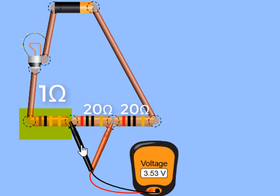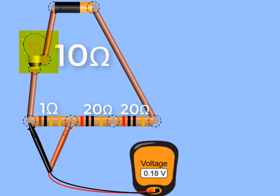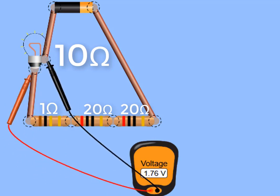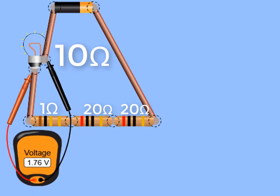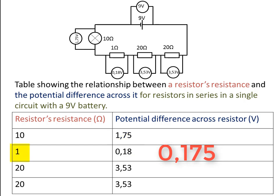What do you think it's going to be across the 1 ohm resistor — again 3.53 or less? It's 0.18 volt, which is obviously less. Now across the bulb — remember the bulb's resistance is 10 ohms — will it be more or less than 0.18? It's 1.76 volts, which could be rounded to 1.8 volt. So for the 10 ohm resistor, we measured 1.75 volts; for the 1 ohm resistor, 0.175 volt — which is a tenth of 1.75, since 1 ohm is a tenth of 10 ohms. Both 20 ohm resistors had the same voltage: 3.53 volts.